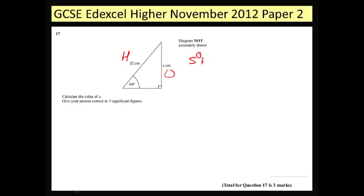Then if I go to my SOHCAHTOA, I can see that of these three triangles, badly drawn triangles, of these three, it's actually the SOH triangle I'm interested in.